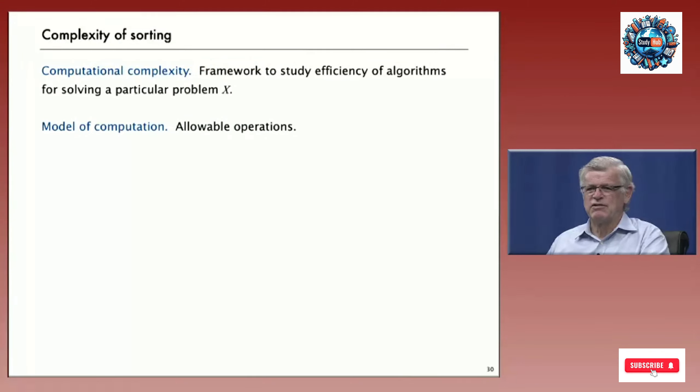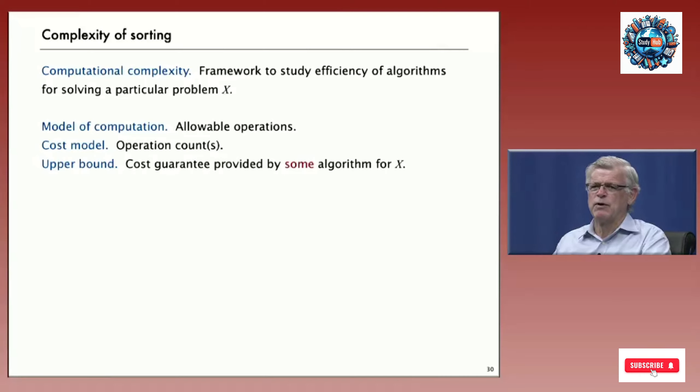That's called computational complexity. In order to do this sensibly, we need what's called a model of computation - the operations the algorithms are allowed to perform. For sorting, that's kind of straightforward. We're going to have a cost model where we count the comparisons. In framing the difficulty of problems, we'll need two things. One is what's called an upper bound, which is a cost guarantee that's provided by some algorithm for solving the problem. That's an upper bound on how difficult it is to solve the problem. We have an algorithm that can solve it, so it's at least that easy.